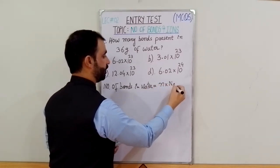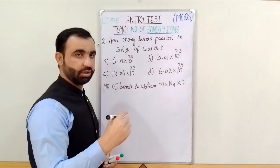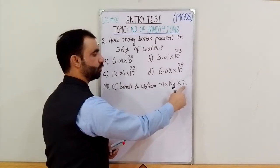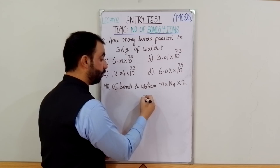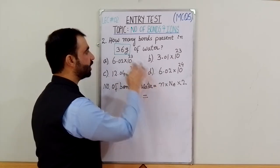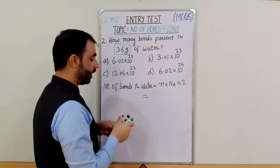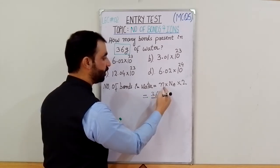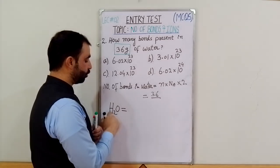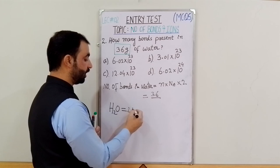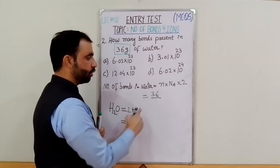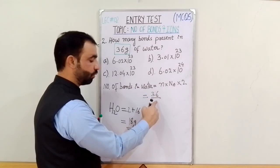We multiply by Avogadro's number and multiply by 2, because water molecules have 2 bonds. First we need to find the number of moles using the formula: moles = given amount divided by molar mass. The given amount of water is 36 grams. The molar mass of water H₂O is: 2 hydrogens (mass 1 each = 2) plus 1 oxygen (mass 16) = 18 grams per mole.